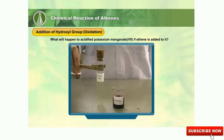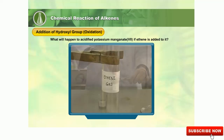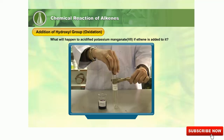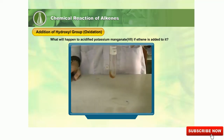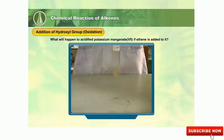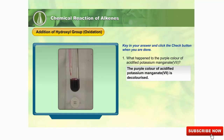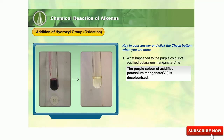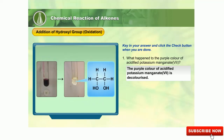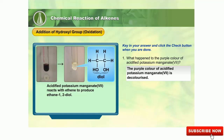Let's take a look at what will happen to acidified potassium manganate 7 if ethene is added to it. When alkenes react with acidified potassium manganate 7 solution, the purple colour is decolorized and a colourless liquid is formed. This addition reaction is called oxidation. Acidified potassium manganate 7 reacts with ethene to produce ethane-1,2-diol. Diol is a saturated alcohol with two hydroxyl groups on adjacent carbon atoms.